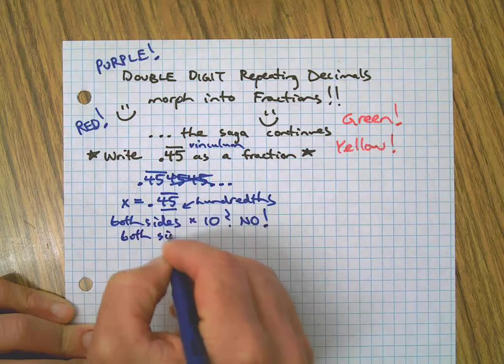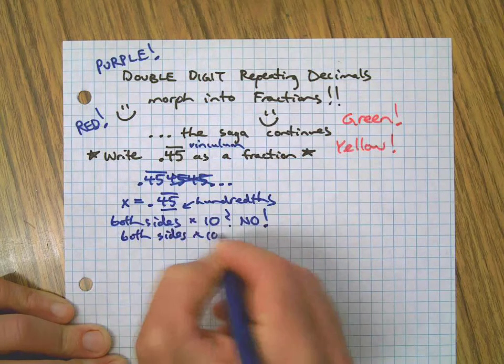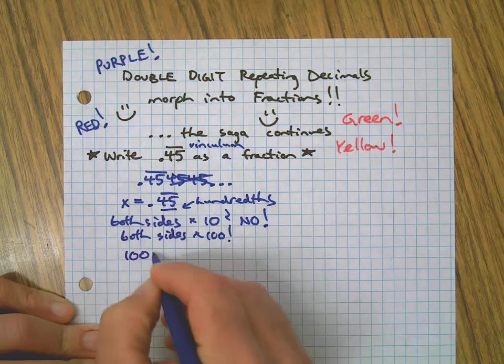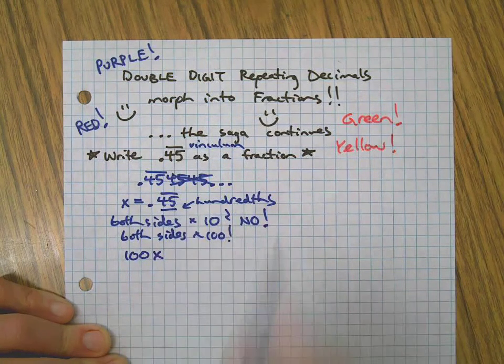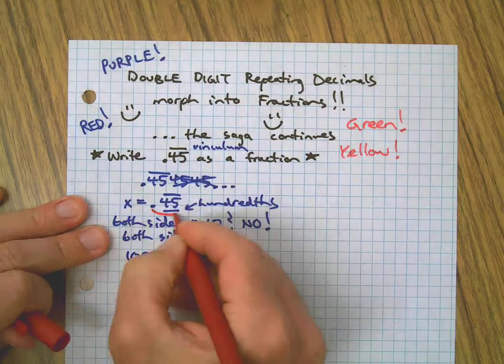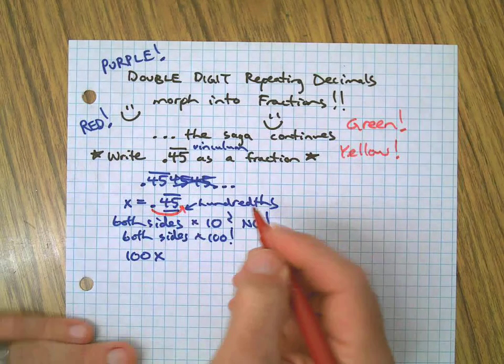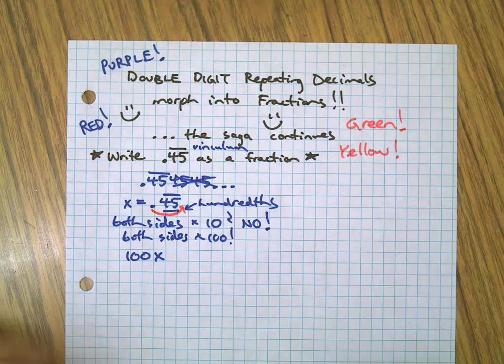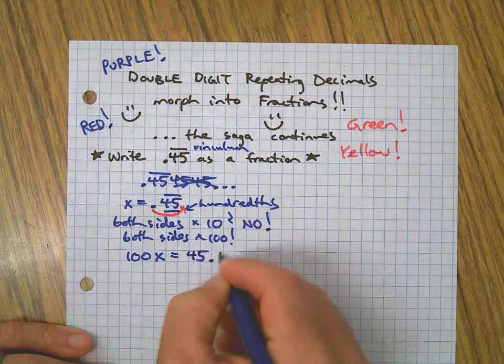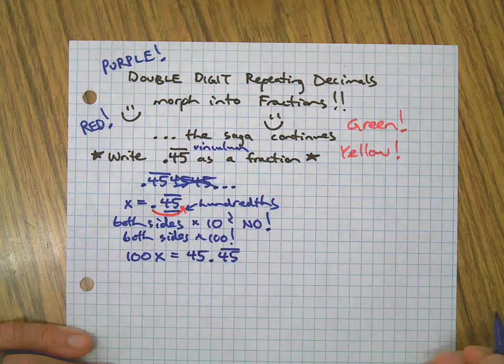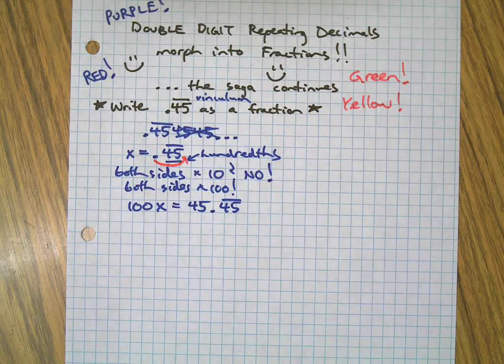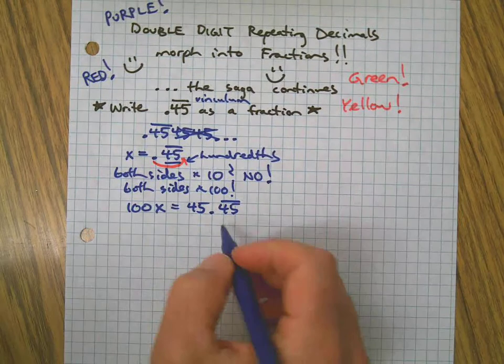So both sides by a hundred will get it done this time. Yes. So when I multiply both sides by a hundred, what that really does with our decimal is it moves it over to the right two spots and we will still have the repeating 45, just multiplied by a hundred. No big deal.